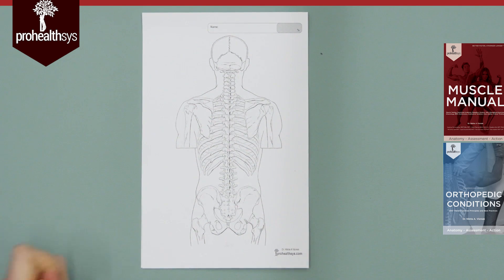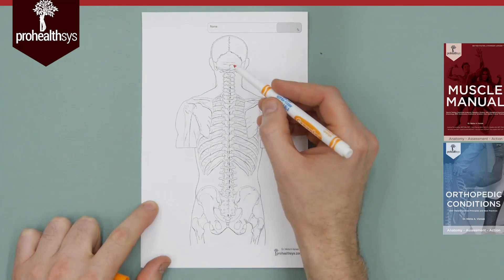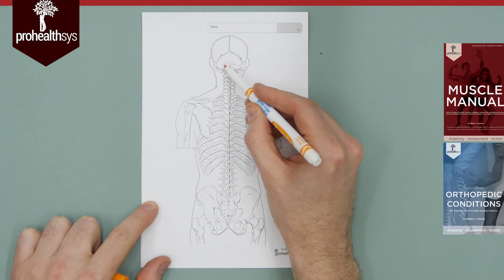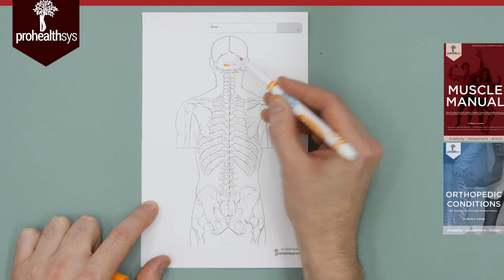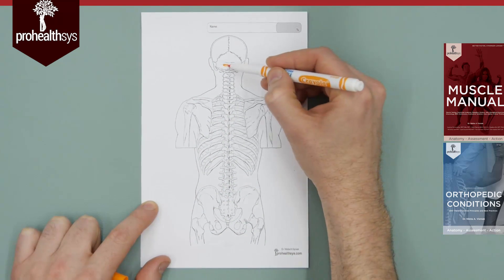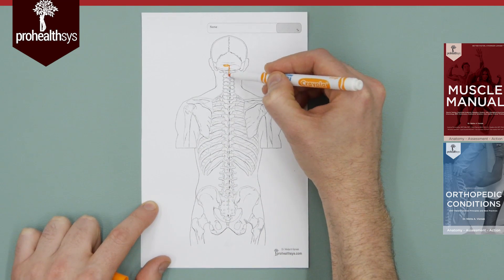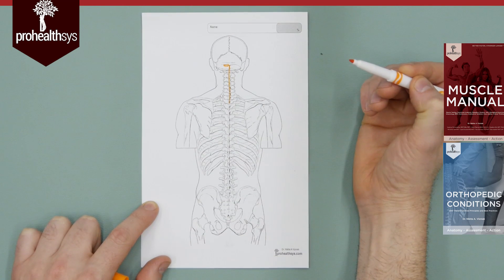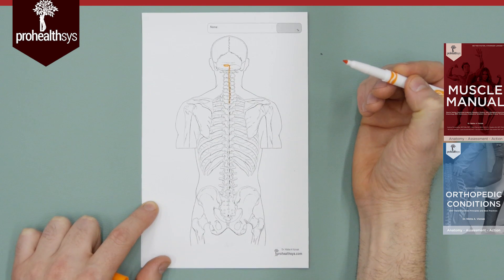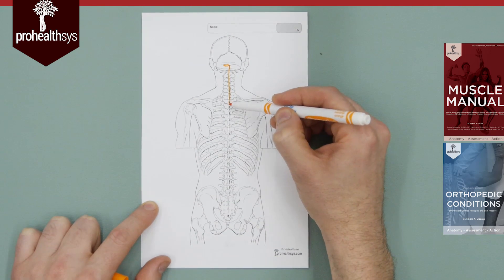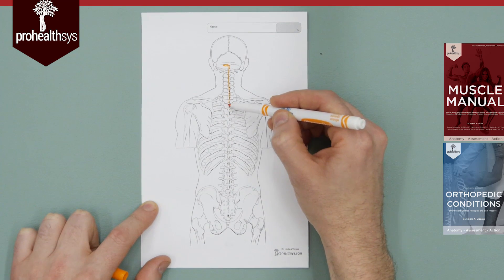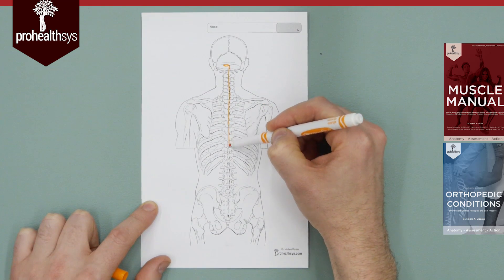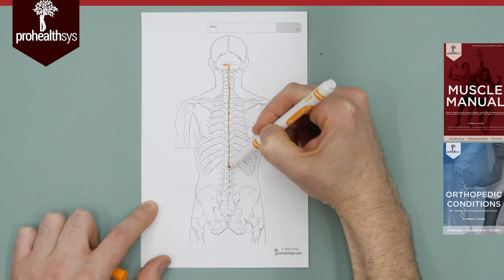Who can give me all the origins of trapezius? EOP — so at the top it's the external occipital protuberance, superior nuchal line, then the nuchal ligament all the way down to C7, and then spinous processes T1 all the way down to T12.